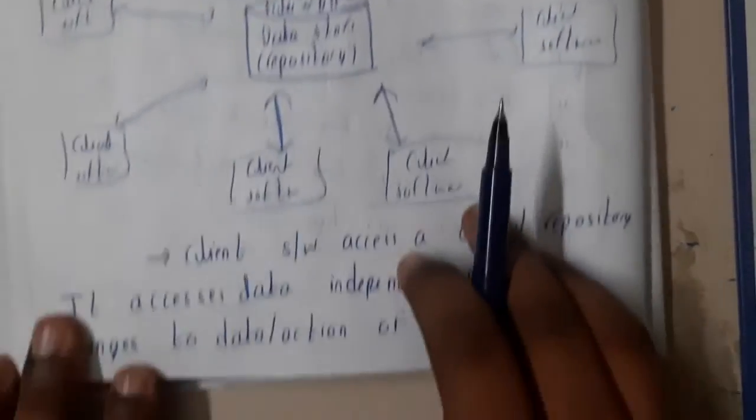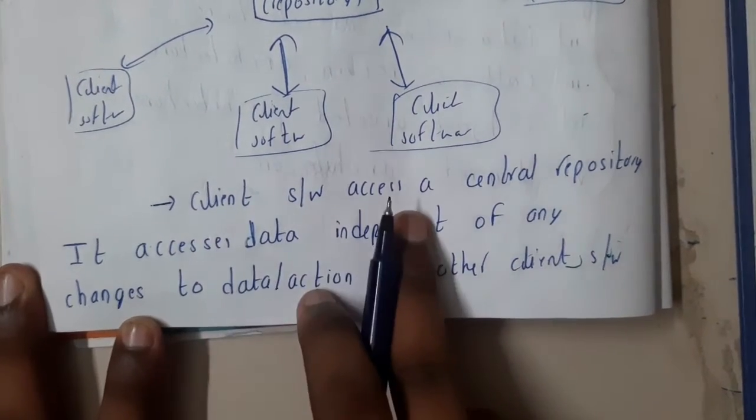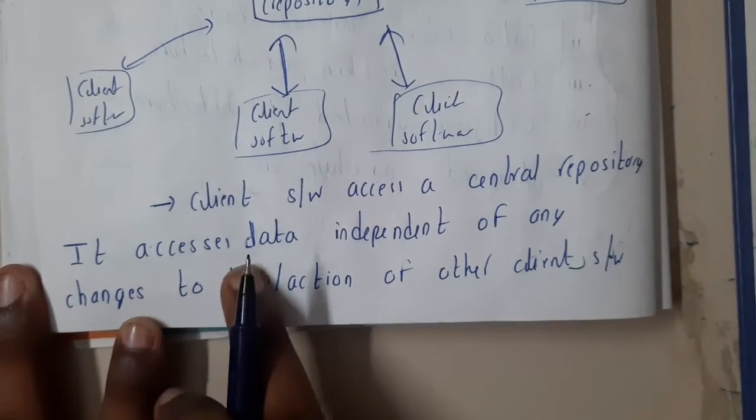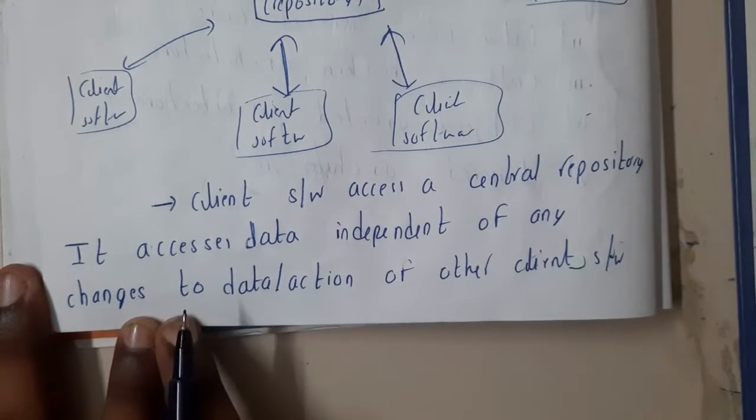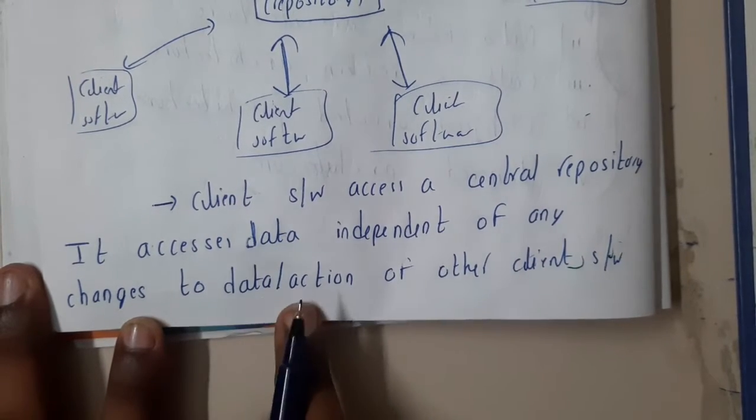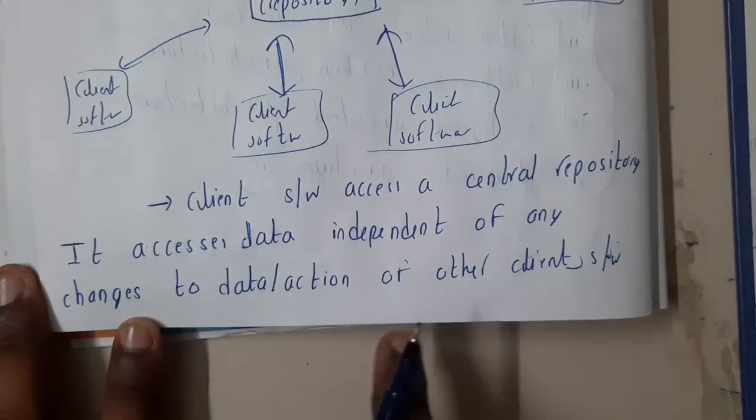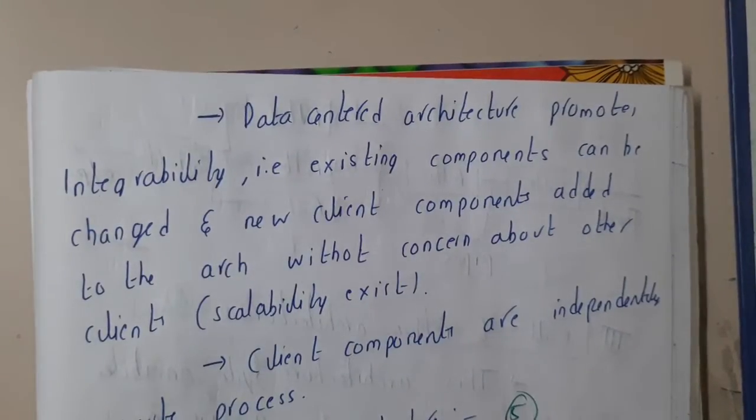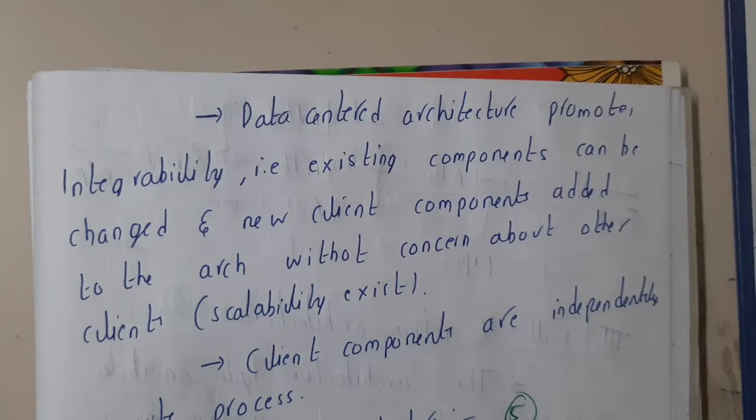Client software accesses the center repository. It accesses data independent of any changes to data or action of the other clients. Basically, even if other clients change it, until it is finalized or committed, there will be no change for other clients.